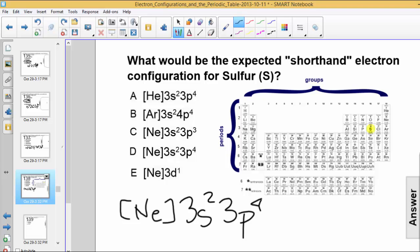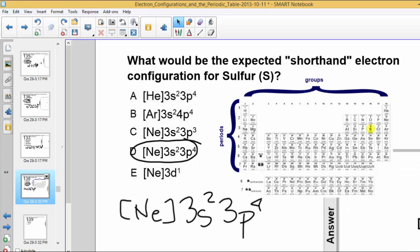10 for neon, 2 in the 3s, and 4 in the 3p gives us a total of 16 electrons. And that would represent the correct shorthand configuration for sulfur. So the answer in this case is letter choice D, neon 3s2, 3p4.